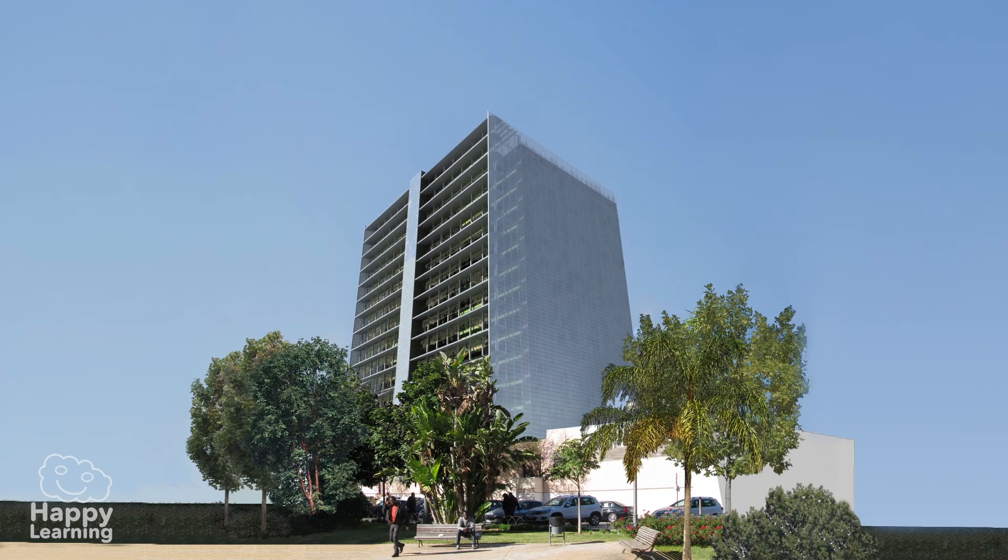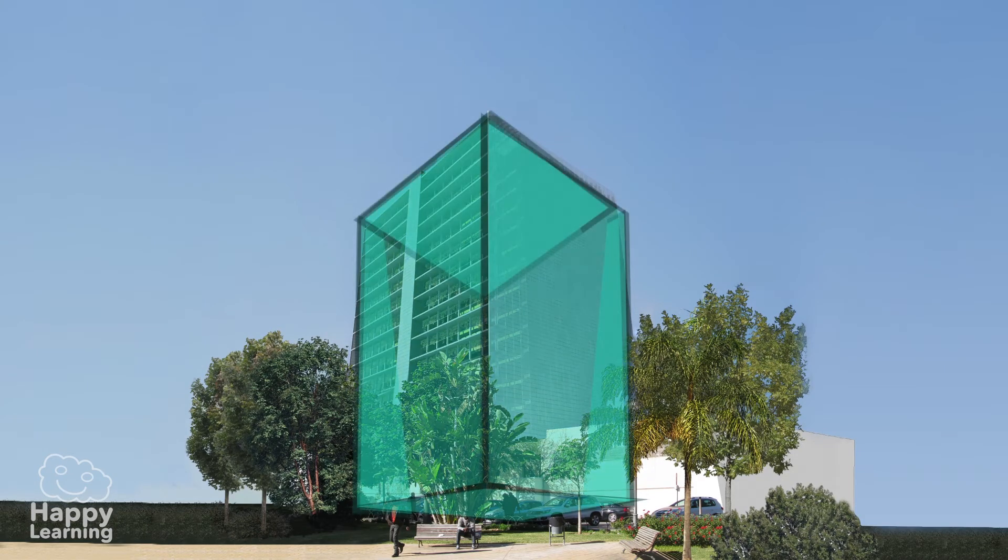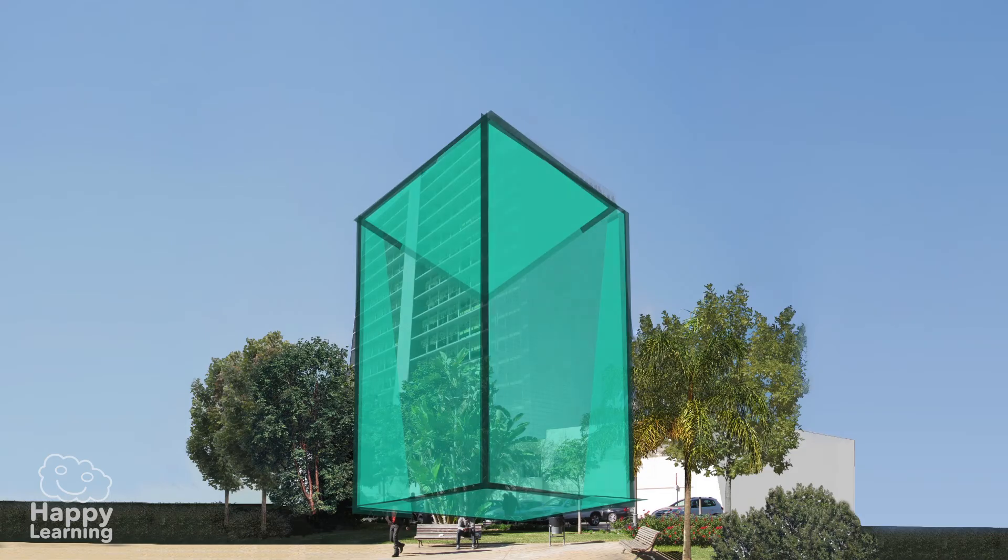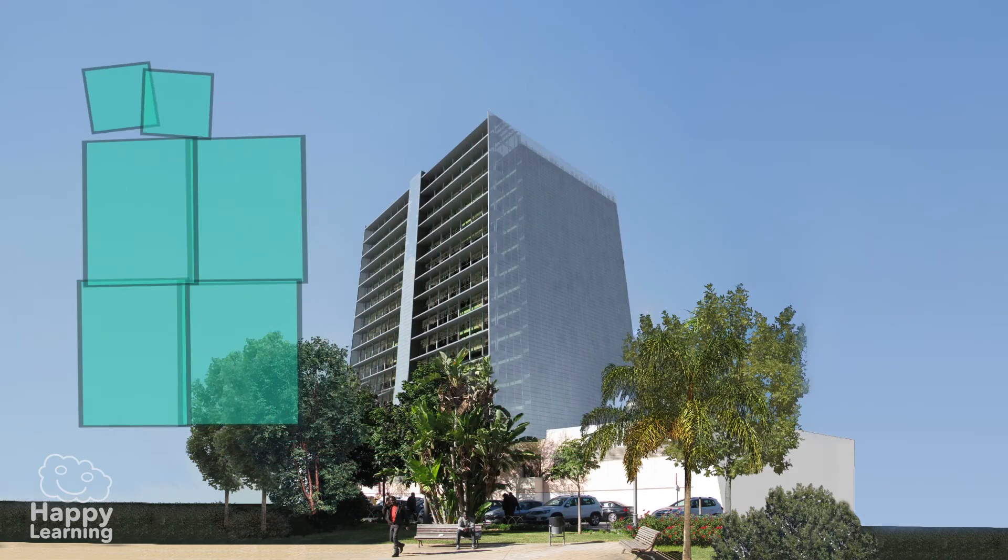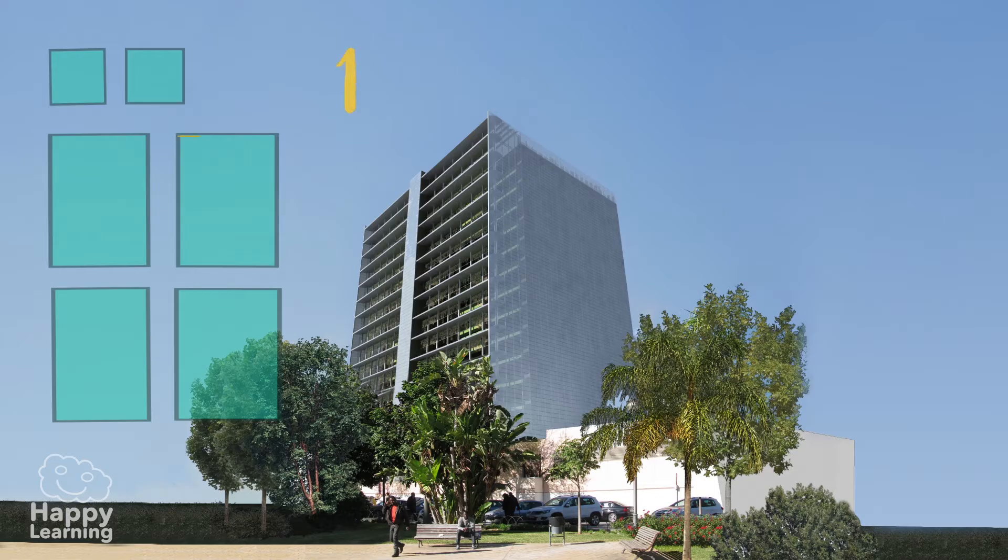Observe this building and we will go discovering the three elements. As you can see, this building is a polyhedron formed by quadrilaterals, which are polygons with four sides.